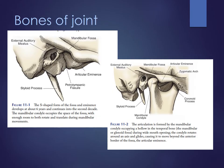The bones of the joint would essentially be parts of the maxilla, the mandibular fossa, articular eminence and the petrotympanic fissure which you can see in the image here, as well as the styloid process. Another image shows the articulation formed by the mandibular condyle occupying a hollow in the temporal bone. During wide mouth opening, the condyle rotates around its axis and glides, causing it to move beyond the anterior border of the fossa and the articular eminence.